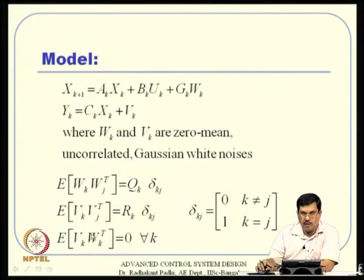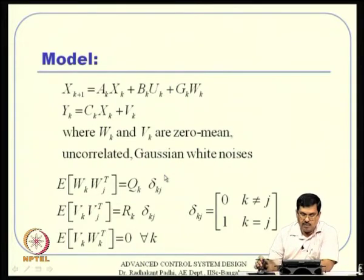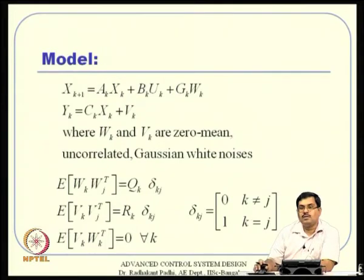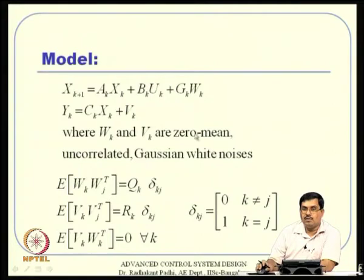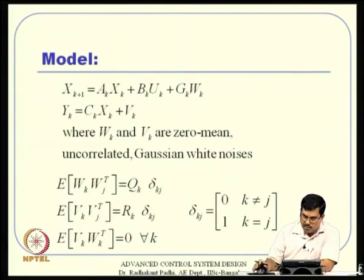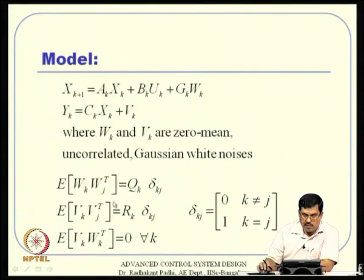There are also tricks for handling non-white (colored) noise: shaping filter design, where you construct an artificial subsystem that takes white noise as input and whose output is the colored noise you want to model. You then augment the original system with this shaping filter and estimate the full augmented state. Filtering theory is a fascinating and complete subject by itself with many such techniques available.